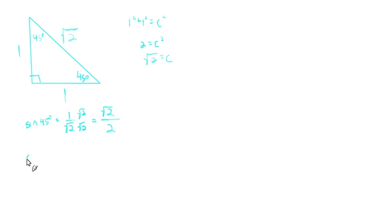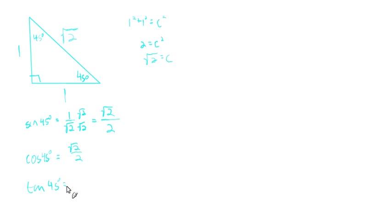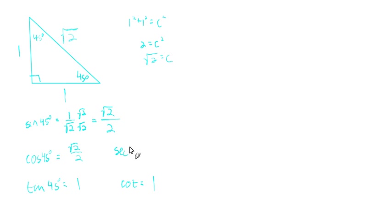The cosine of 45° is adjacent over hypotenuse — also 1 over √2, which again rationalizes to √2/2. The tangent of 45° is opposite over adjacent, which is 1/1 = 1. The cotangent is the reciprocal of the tangent, so 1/1 = 1. The secant is the reciprocal of the cosine, so we flip √2/2 to get √2.